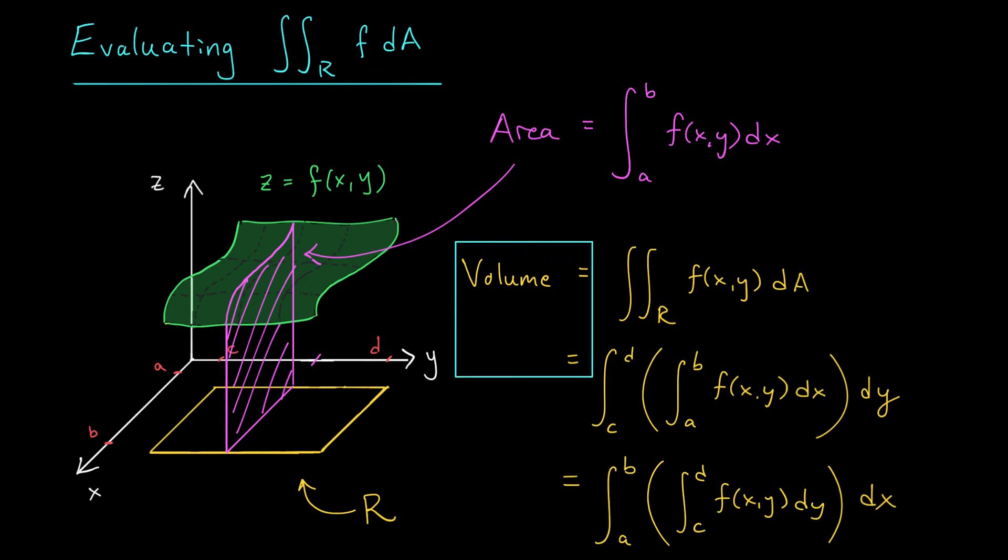We'll end this video with a quick summary of the main ideas. If we wish to know the volume under our surface z equals f of x y and above some region R in the xy plane, we compute the double integral over R of f of x y dA. Doing this amounts to computing two single integrals, one with respect to x and the other with respect to y. If we're integrating over a rectangle, the order of integration does not matter. Finally, to compute one of these single integrals, we integrate as normal, treating the other variable like a constant.